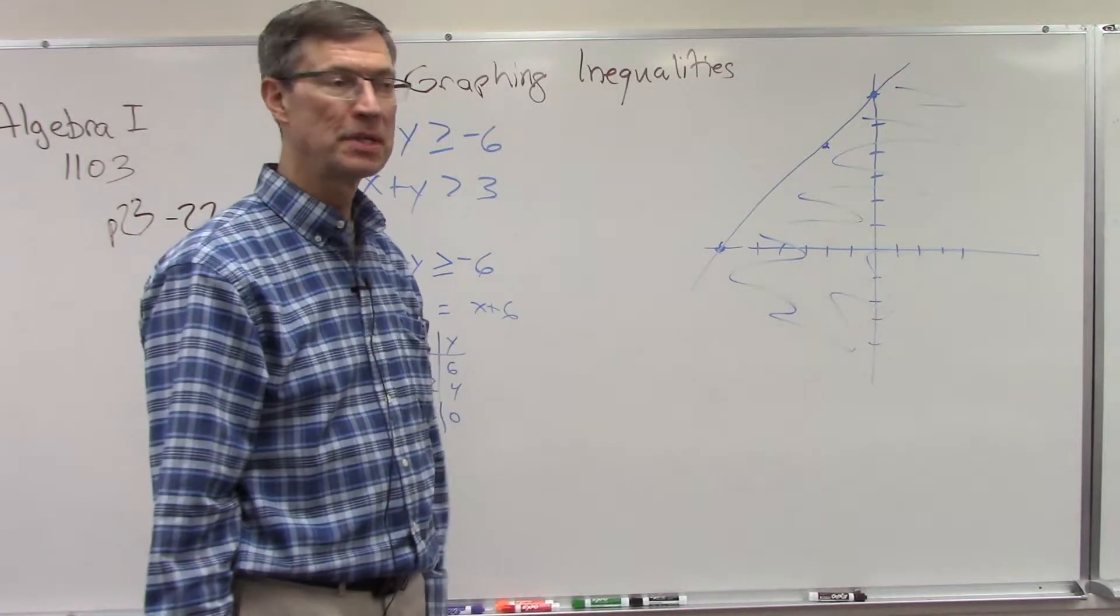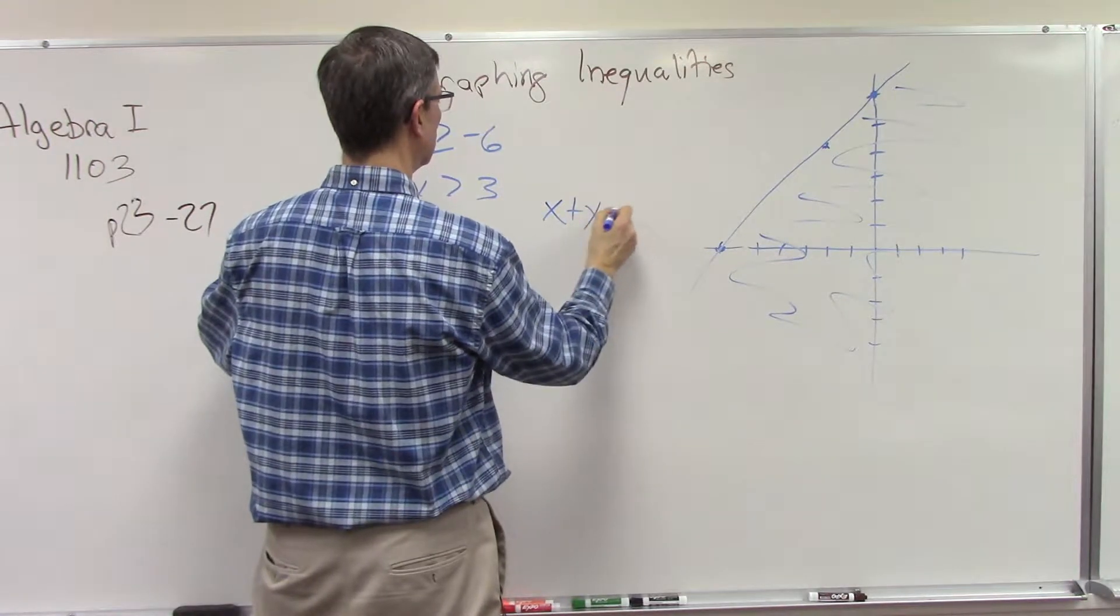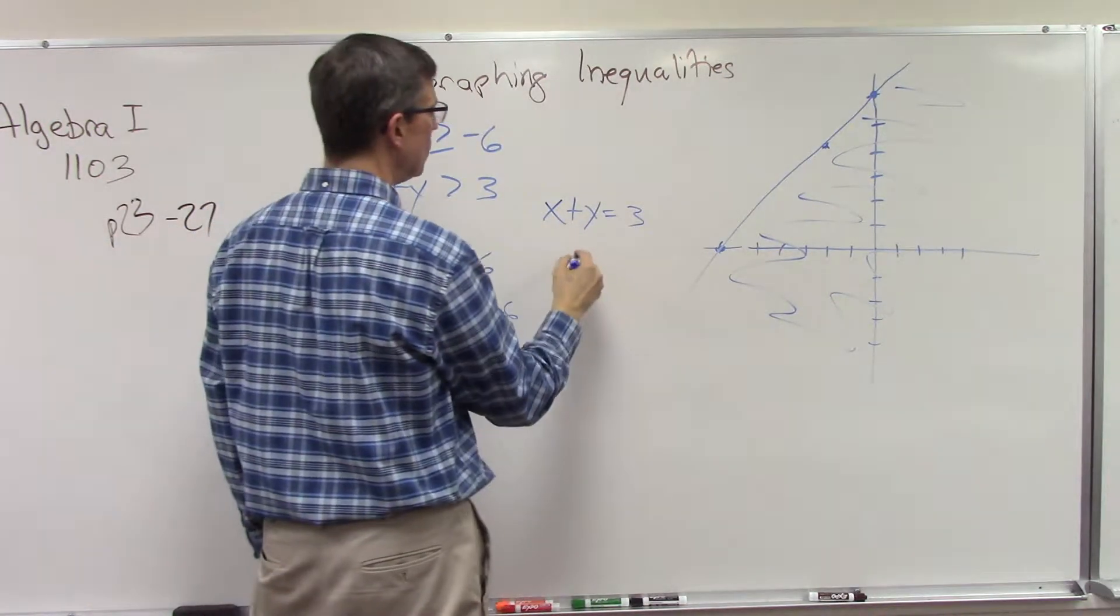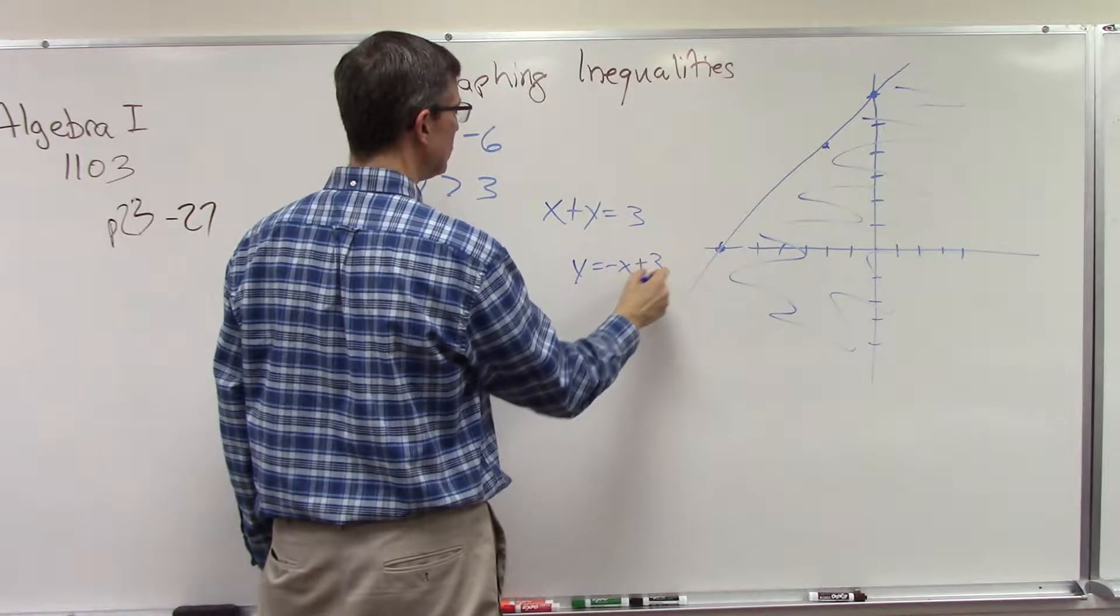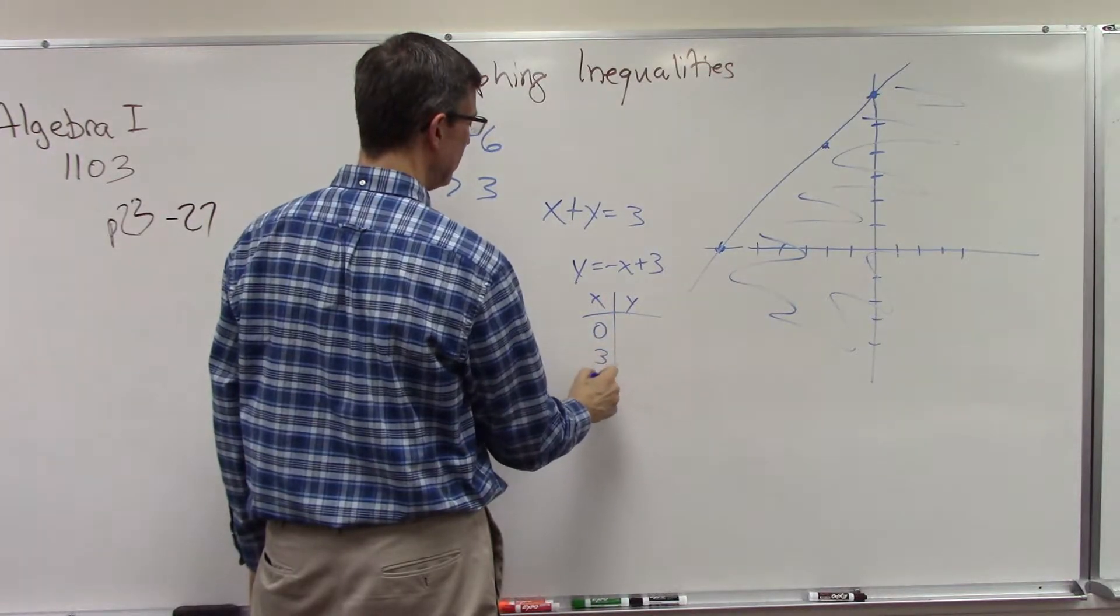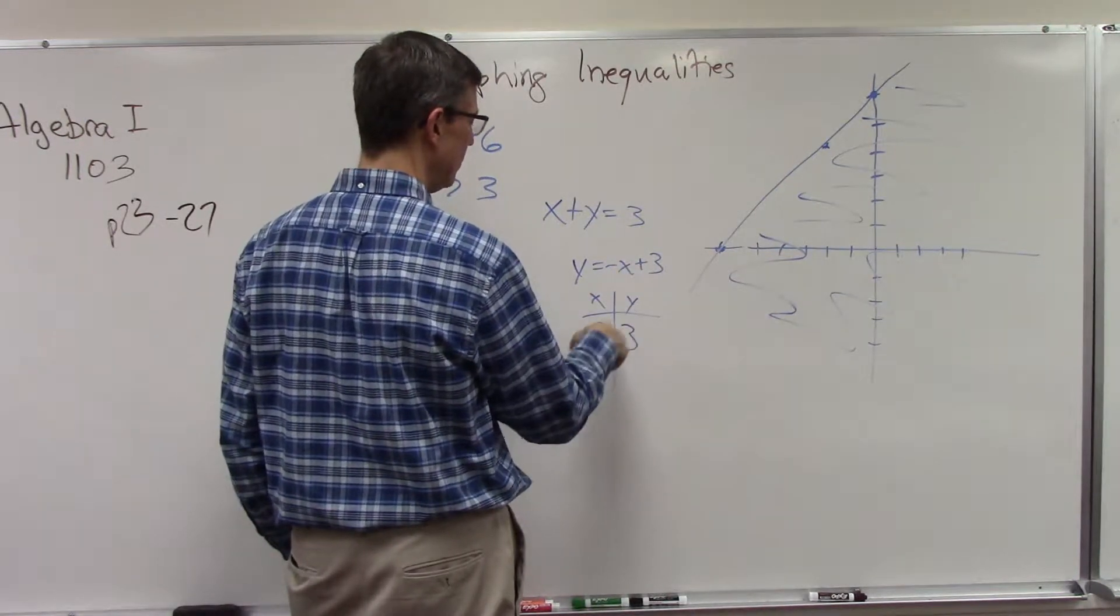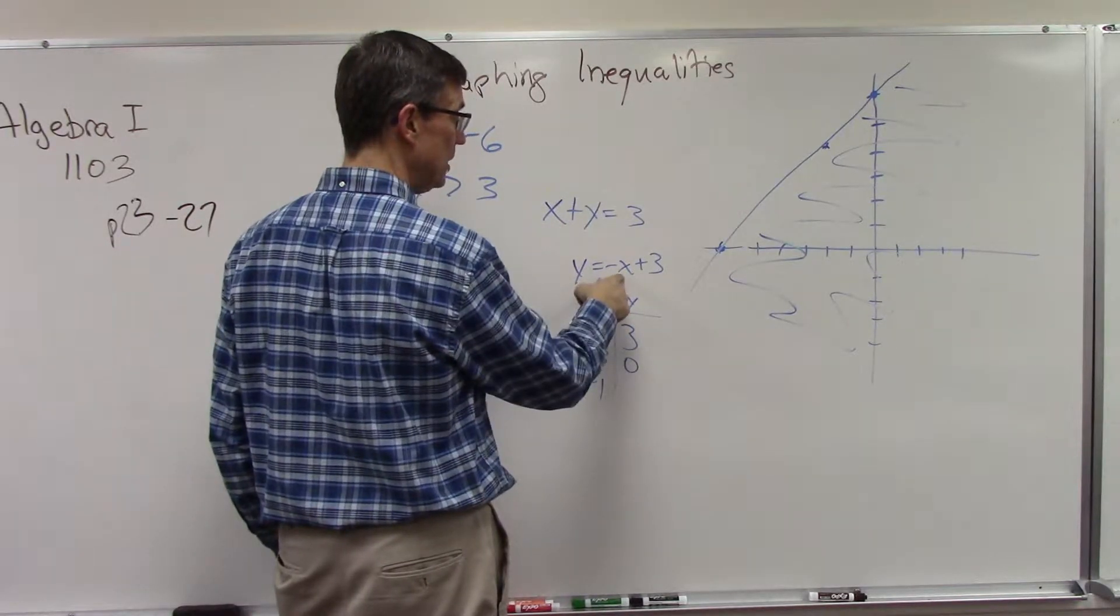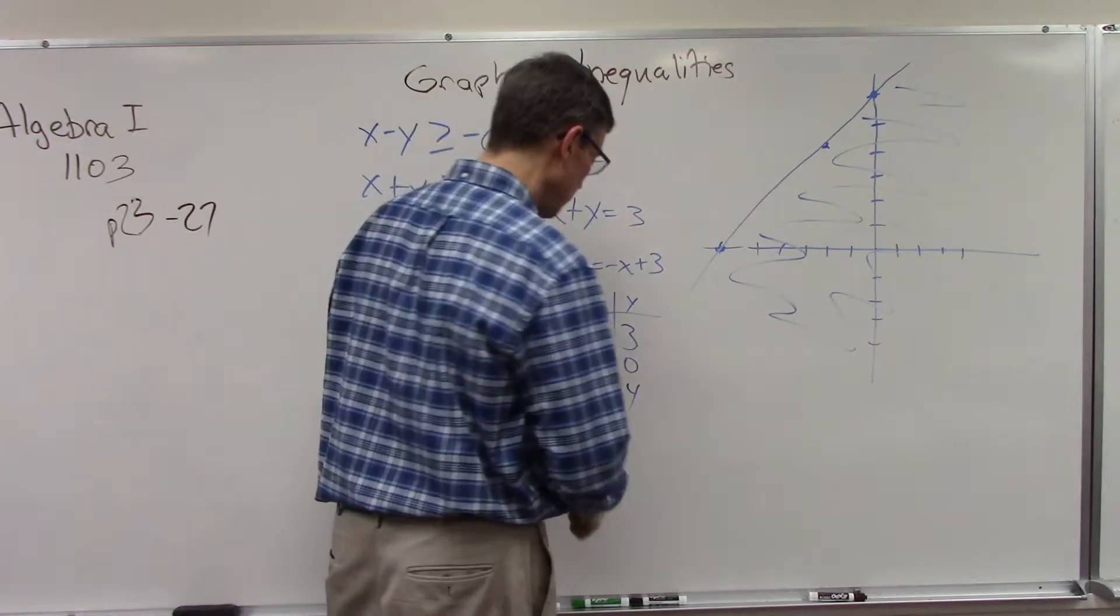Always use the point zero zero as a test point. Now let's take x plus y, and first of all I'll say is equal to three. I know it says greater than three, so let's subtract x from both sides. I get y equals negative x plus three. Now I can plug in some x values. I'll plug in zero, plug in three, plug in negative one. Plug in zero and I get positive three, plug in three I get zero, plug in negative one so negative negative makes that four.